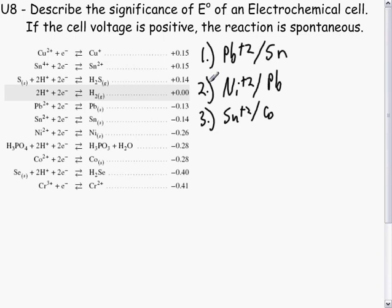For each of the three systems written here - lead plus 2 and tin, nickel plus 2 and lead, tin plus 2 and cobalt - for each of those three cells, predict first the cell voltage, and then second whether or not that cell would be spontaneous.